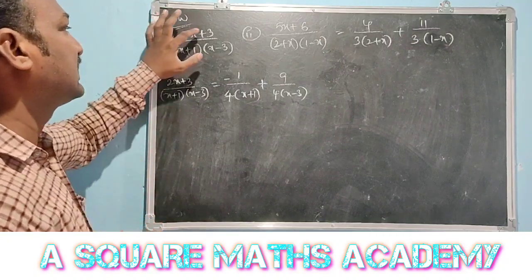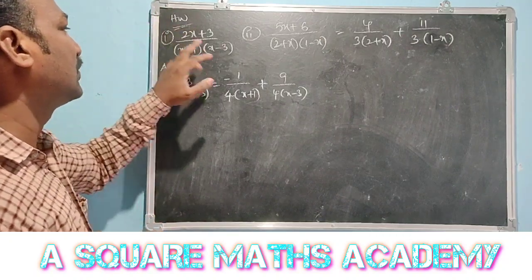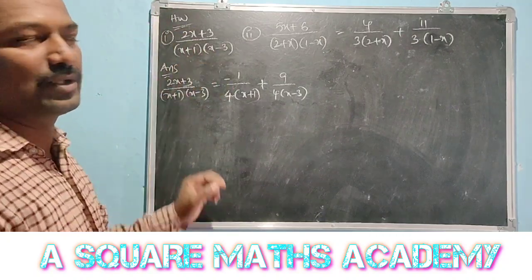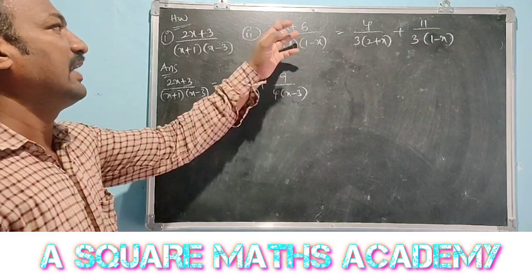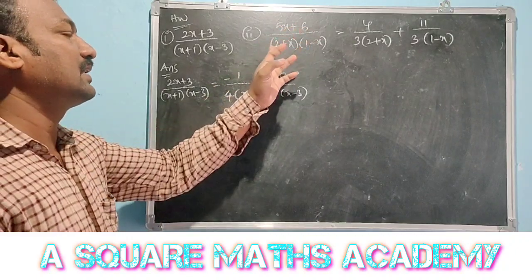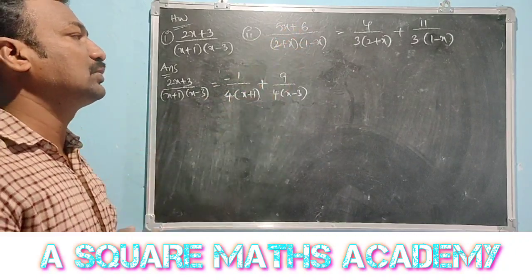The next two practice problems are: (11a) 2x plus 3 by (x plus 1)(x minus 3), and 5x plus 6 by (2 plus x)(1 minus x). These follow the same method.